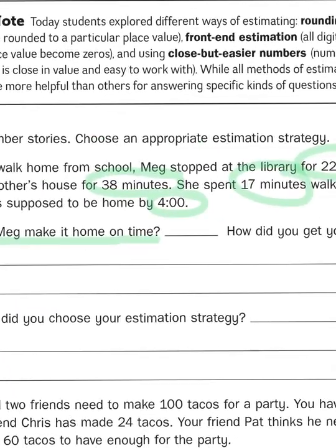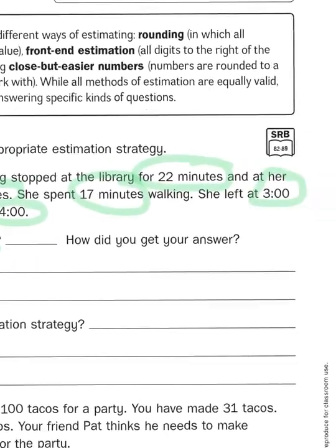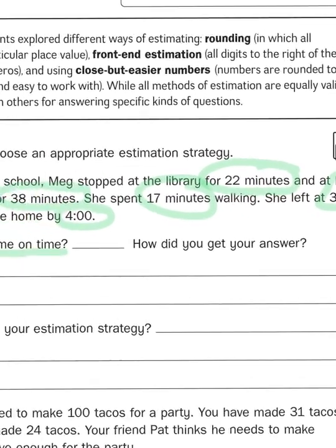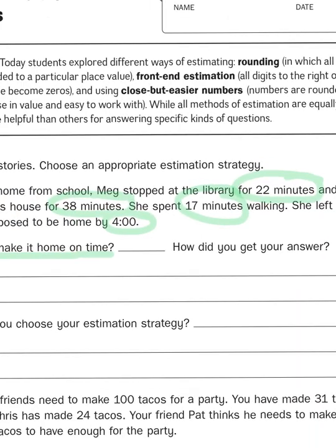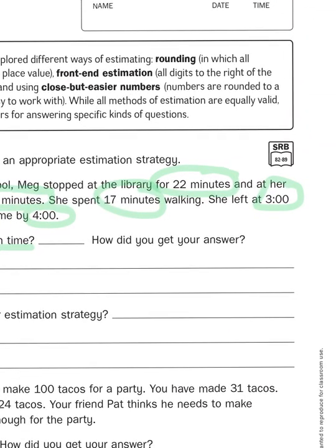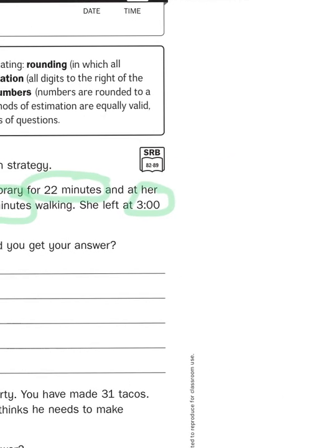Well, one of the things that might be useful to know is, how many minutes are we trying to count here? Well, the difference between 3 and 4 o'clock is the difference of 1 hour, and of course, if you recall, 1 hour is equal to 60 minutes.